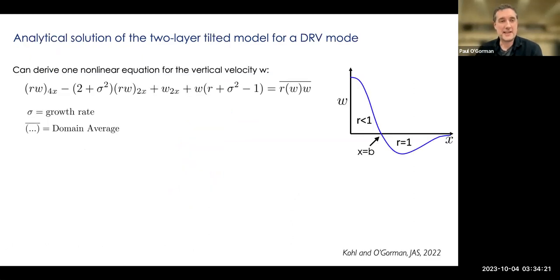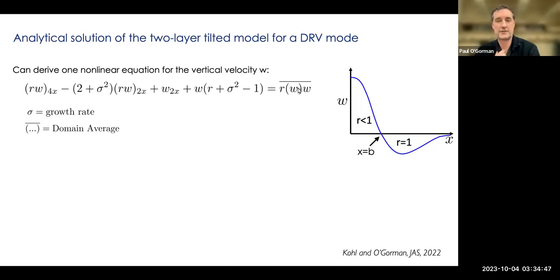Can we make progress analytically? The answer is yes. You can combine the equations of the two-layer model to just get an equation for w — that's a good approach because w is where the nonlinearity is in the small amplitude limit due to latent heating. It involves four derivatives. Sigma is the growth rate. We also have a term that you can view as radiative cooling, which balances in the average the latent heating that emerges in this diabatic Rossby vortex model — this didn't appear in the Emanuel-Fantini-Thorpe type model for a moist wave, which is interesting. The main challenge in solving this is that omega depends on w, making it very nonlinear.